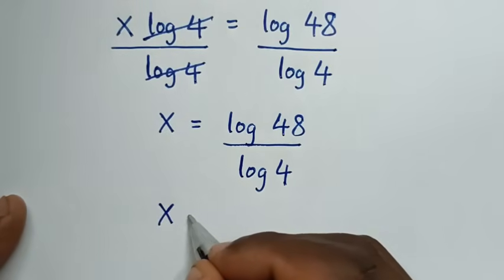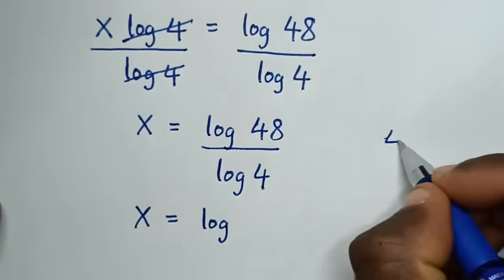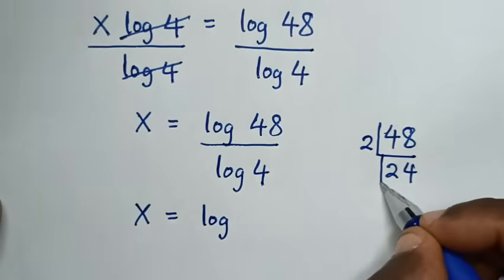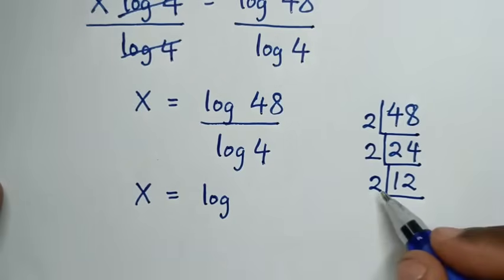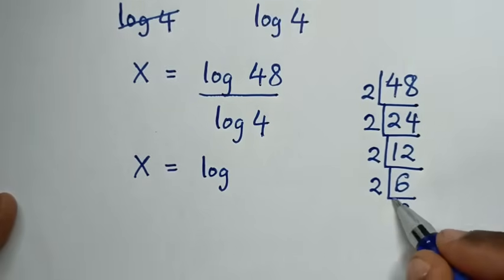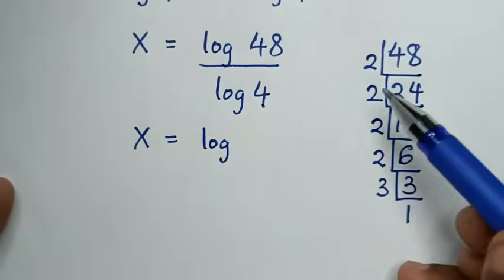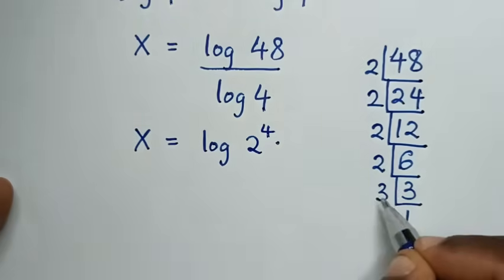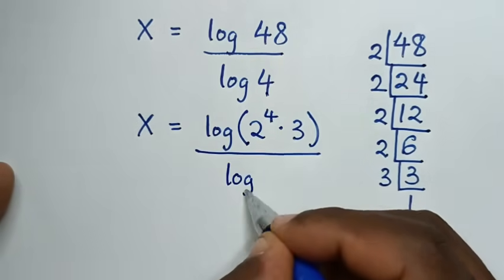In the next step, x is equal to log of 48 over log of 4. We'll find the prime factors of 48: 48 divided by 2 is 24, divided by 2 is 12, divided by 2 is 6, divided by 2 is 3, divided by 3 is 1. So 48 is 2 times 2 times 2 times 2, which is 2 power 4, times 3 — all over log of 4.